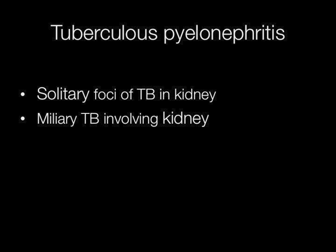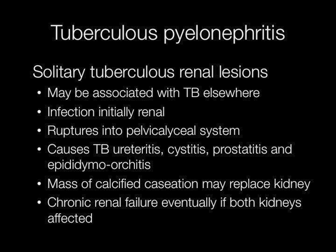Tuberculous pyelonephritis may be caused by solitary foci of TB in the kidney or by involvement of the kidney in cases of miliary TB. Solitary tuberculous renal lesions may be associated with TB elsewhere. The infection is initially renal, then ruptures into the pelvic calyceal system, causing TB ureteritis, cystitis, prostatitis, and epididymo-orchitis. A massive calcified caseation may replace the kidney, which may result in chronic renal failure if both kidneys are infected.